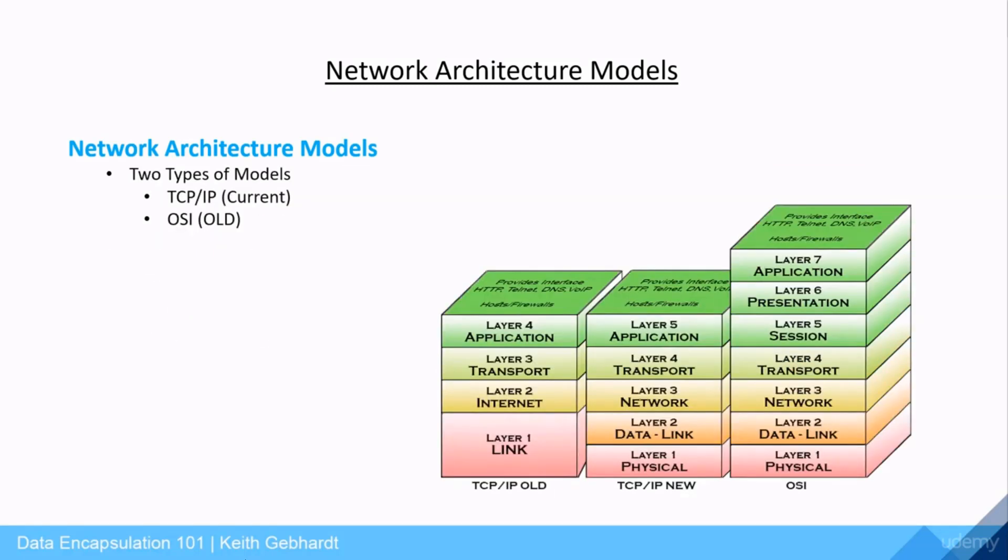We have two types of network architecture models. The current version, which is what we use today, is the TCP/IP model, and then we have the older model called the OSI model.